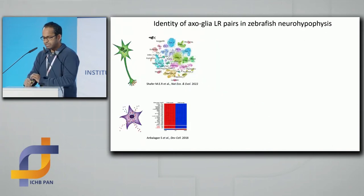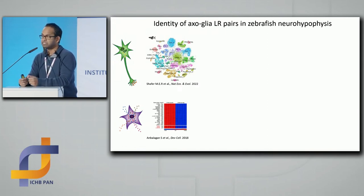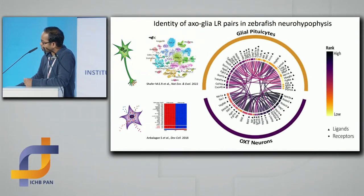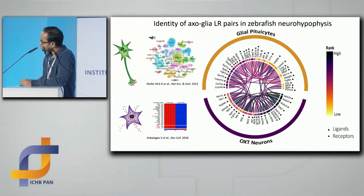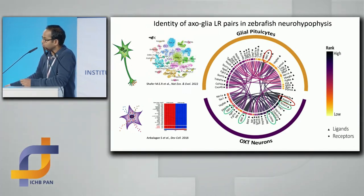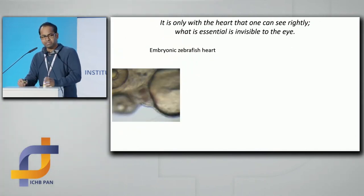Going back to my interest in the neurohypophysis — we can now take every available single-cell dataset. We already have zebrafish single-cell data of the hypothalamus, neurohypophysis, and so on. Here is a map of what we made — all the potential ligand-receptor interactions that may happen in the neurohypophysis. Some of them we already published, such as Slit3-Robo2, but now we know the story is more complex because Slit3 is not only in the glia, but also in the neurons. So it just complicates things. We made it — but so what?